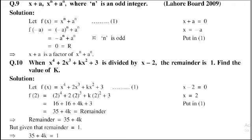Question number 10: When x power 4 plus 2x power 3 plus kx squared plus 3 is divided by x minus 2, the remainder is 1. Find the value of k. So first of all, let f of x equal to x power 4 plus 2x power 3 plus kx squared plus 3, that is equation number 1.